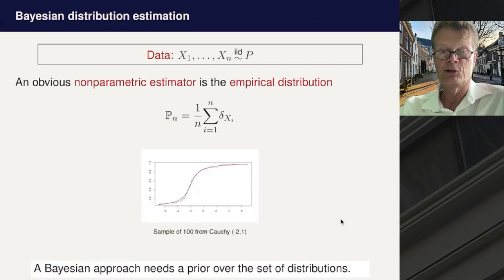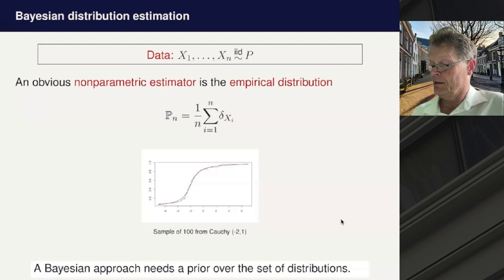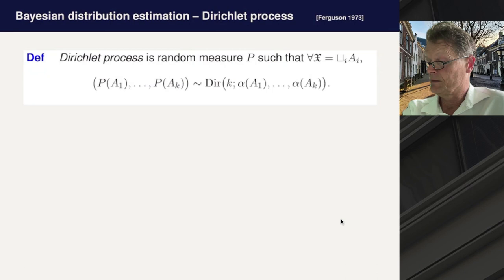If you're Bayesian, it's not as easy because you first need to put a prior over the set of all probability distributions. In the 1970s, Thomas Ferguson suggested a prior that is still the standard in this situation: the Dirichlet process.